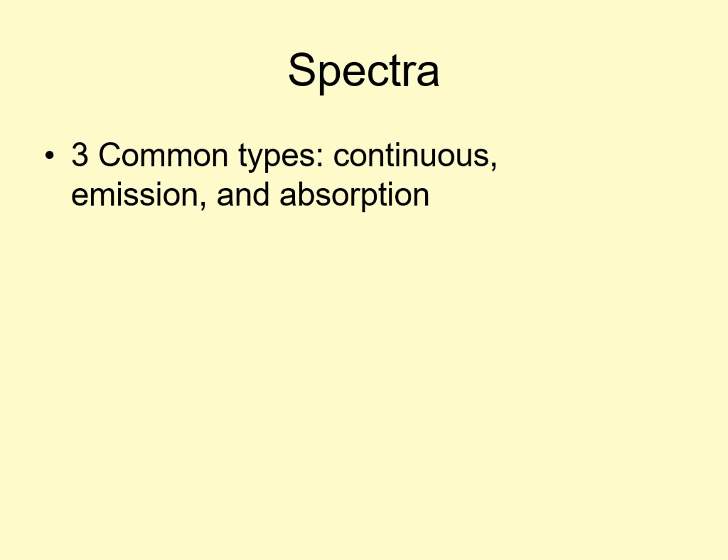Now that we've looked at thermal radiation, it's time to put that into a larger context by discussing different kinds of spectra. We usually divide spectra up into three main types: continuous, emission, and absorption.